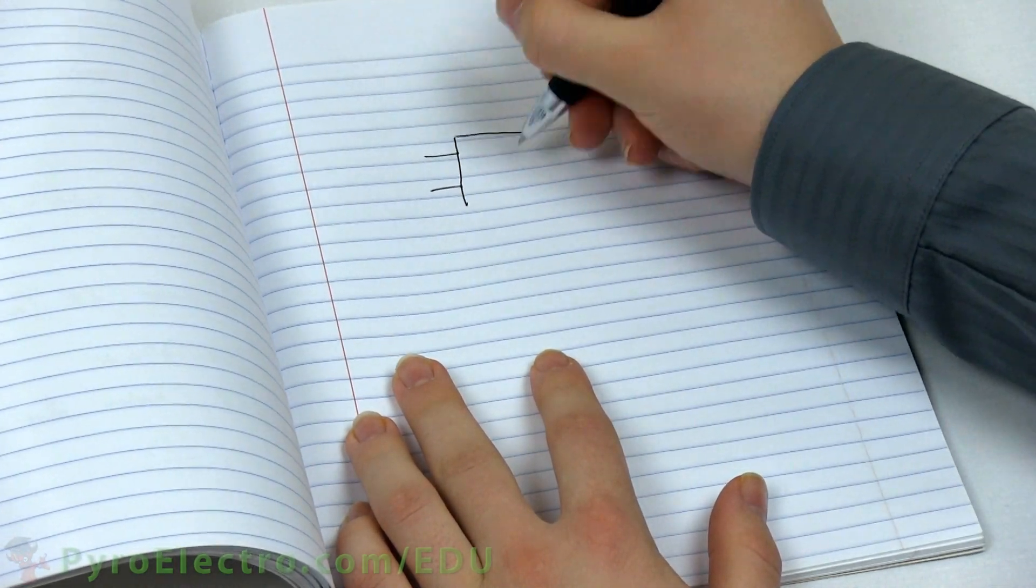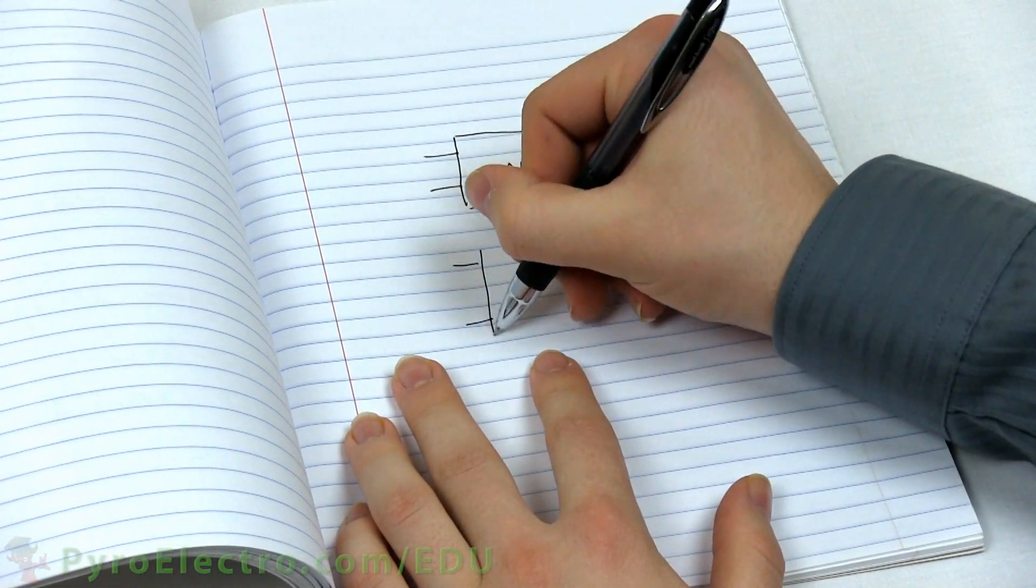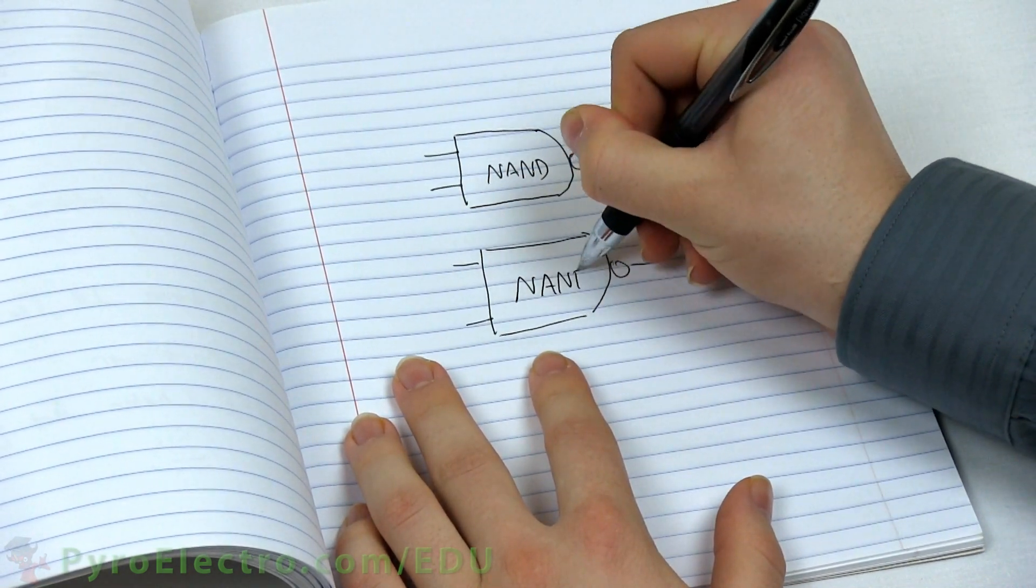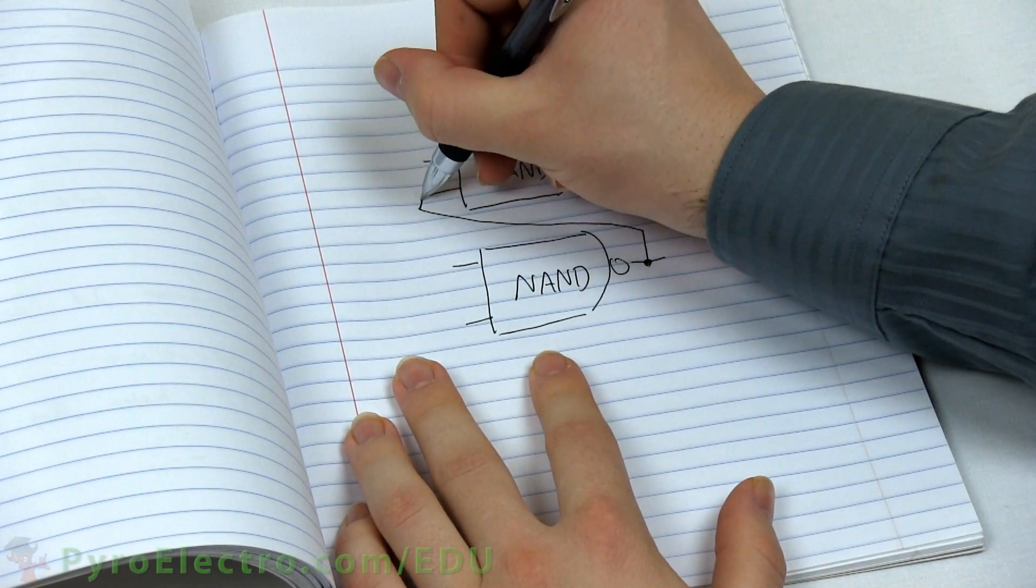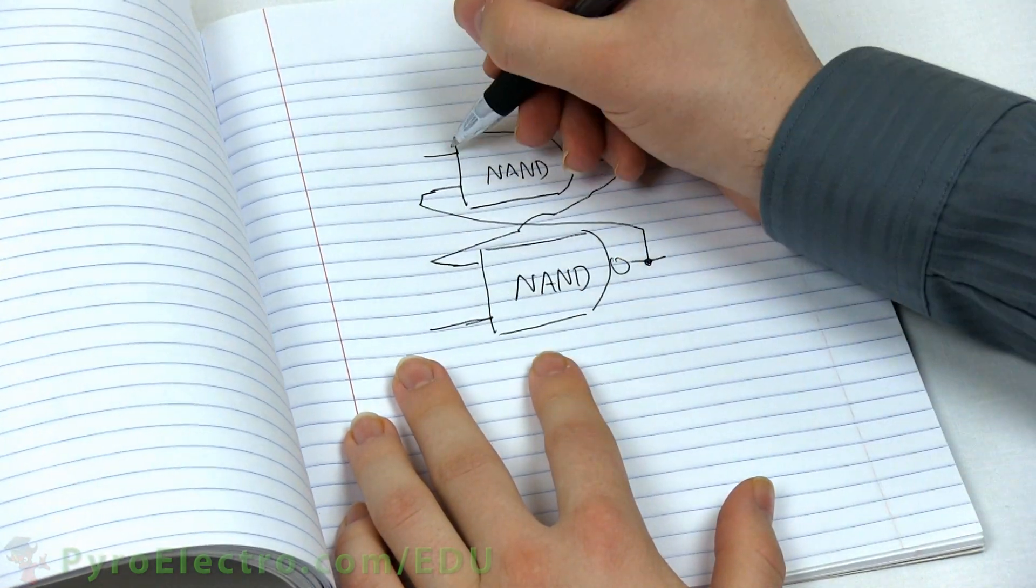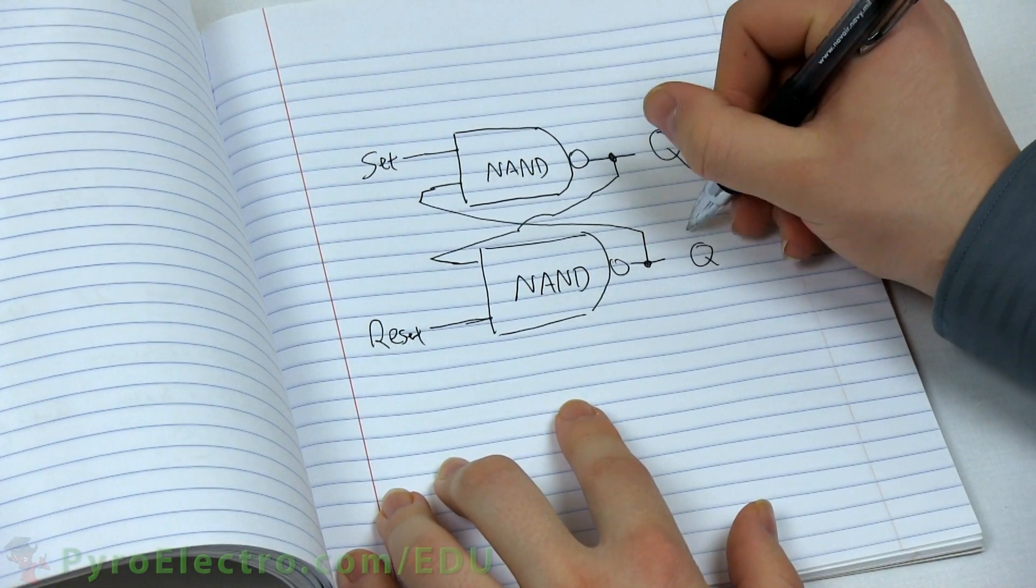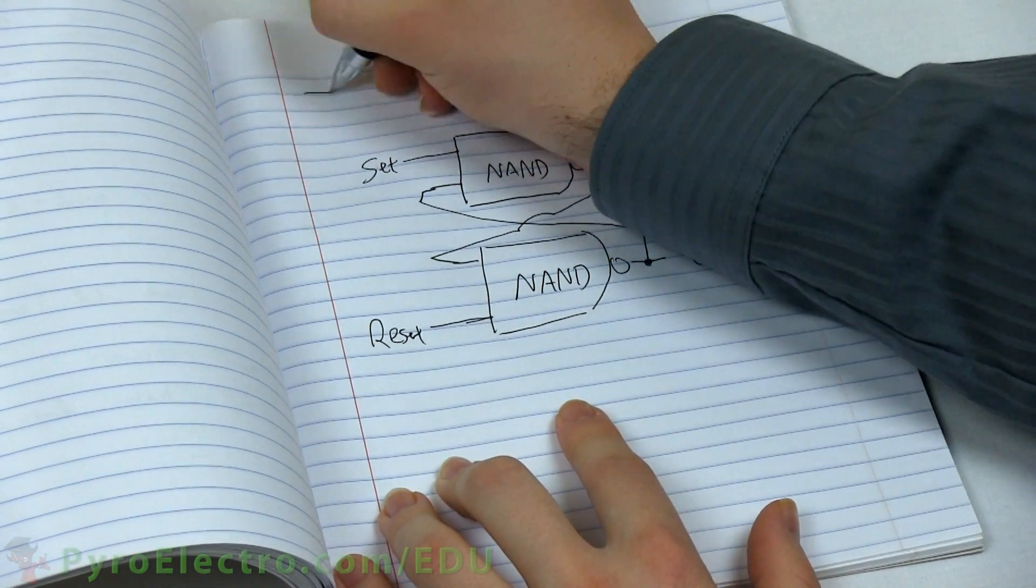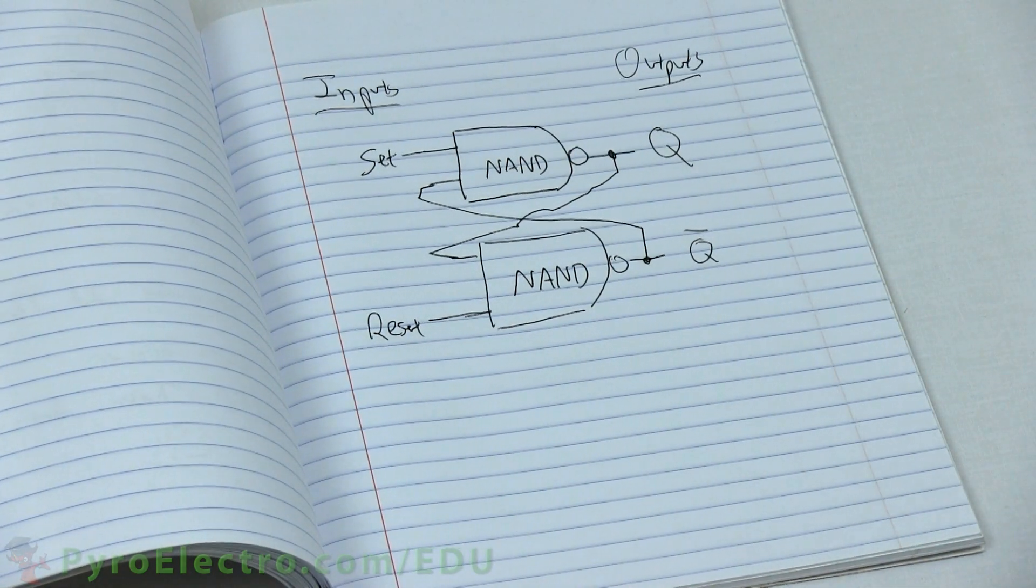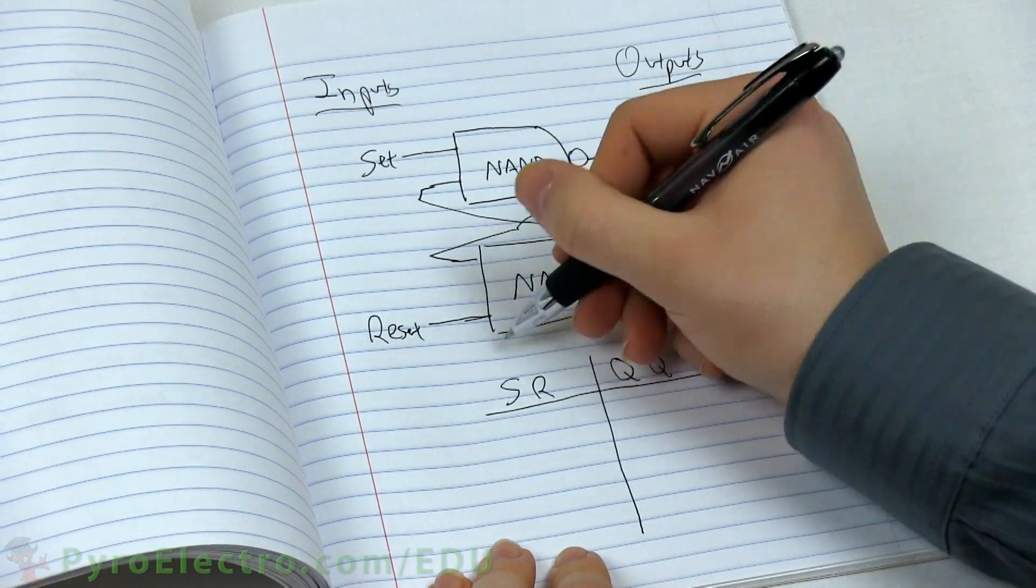A second way to build an SR LATCH is by using two NAND gates in the same configuration as before. The NAND gates output are connected to an input on the opposite gate, and there is a set and reset connection to the two remaining inputs. The NAND gates have two inputs, S and R, and two outputs, Q and Q̄. The resulting truth table follows a similar pattern as with the NOR gate method.